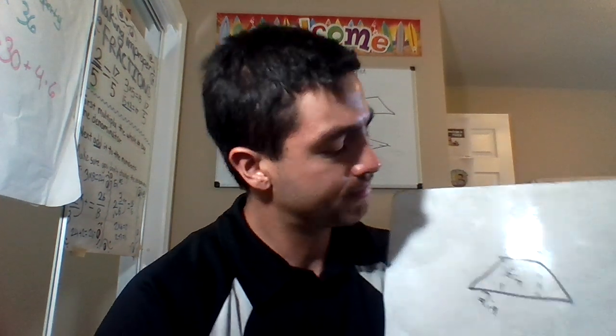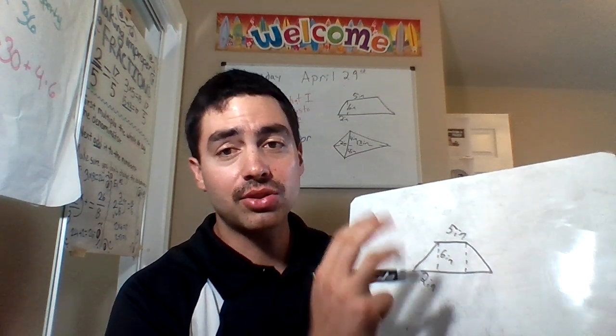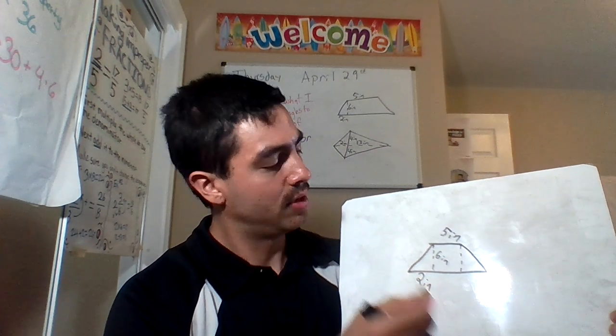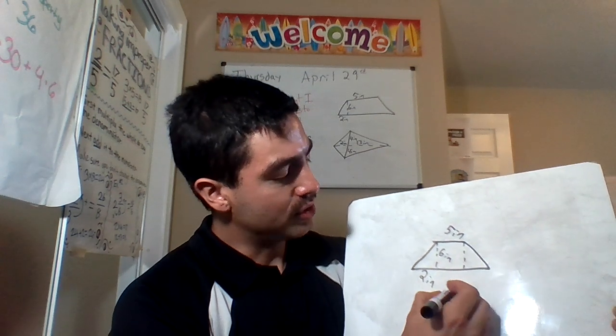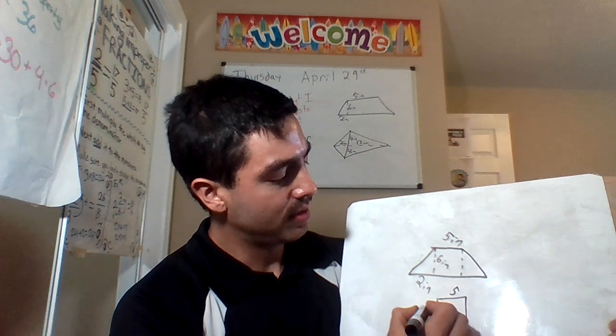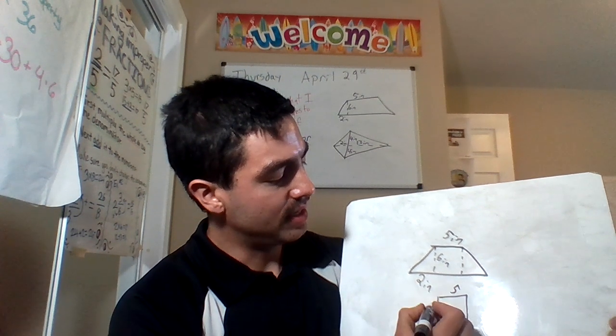So here's how we solve for it. First off, we're gonna break it up into three shapes. We have a rectangle right here and two triangles. First, let's redraw the rectangle and find its area. The height is five. I'm sorry, the base is five and the height six.